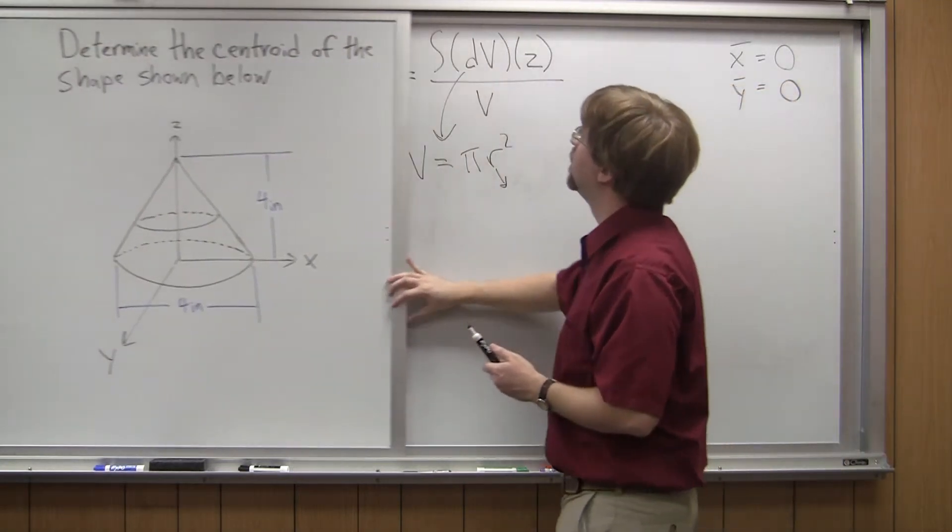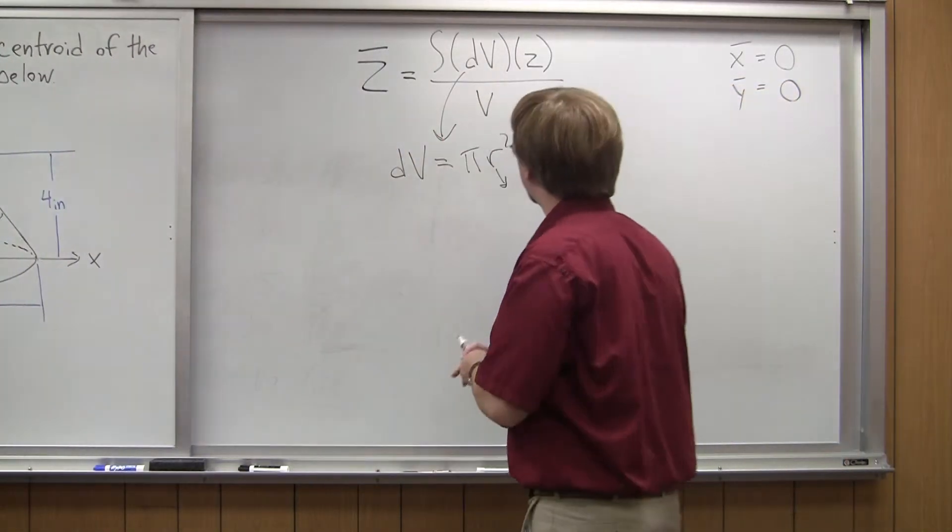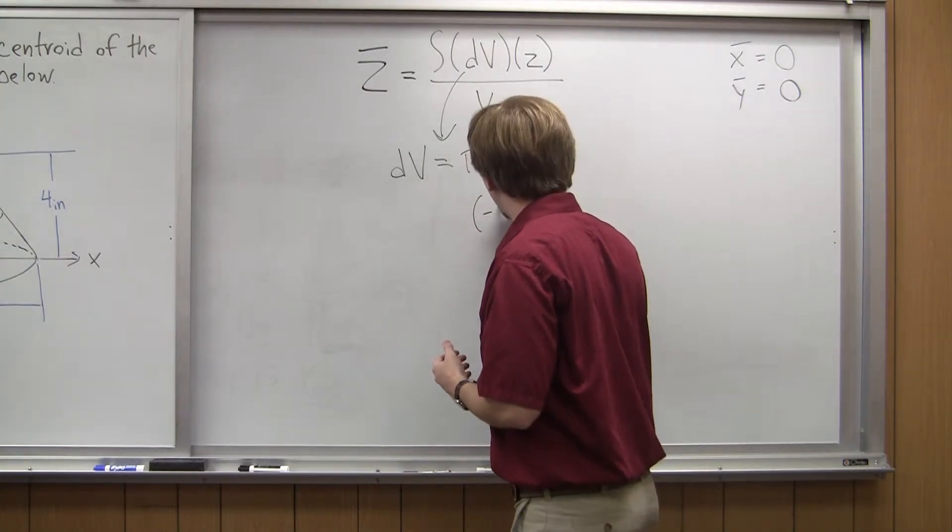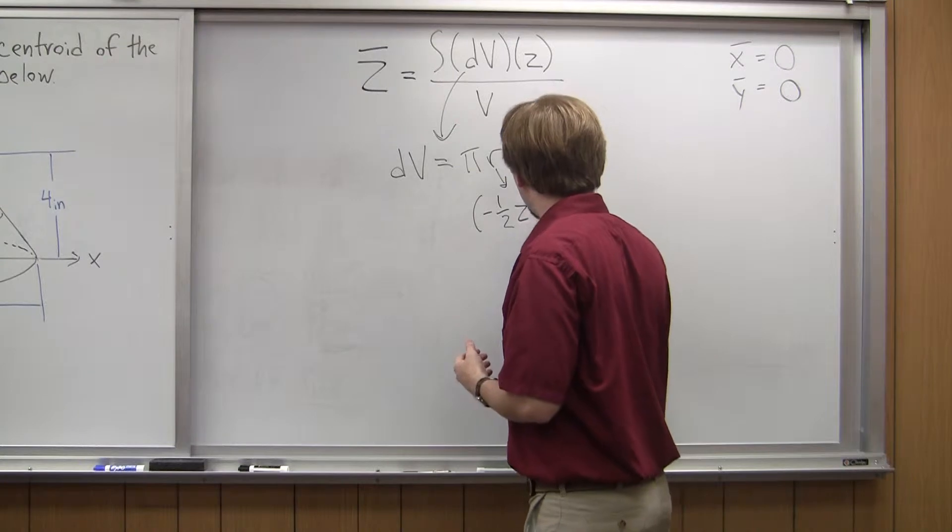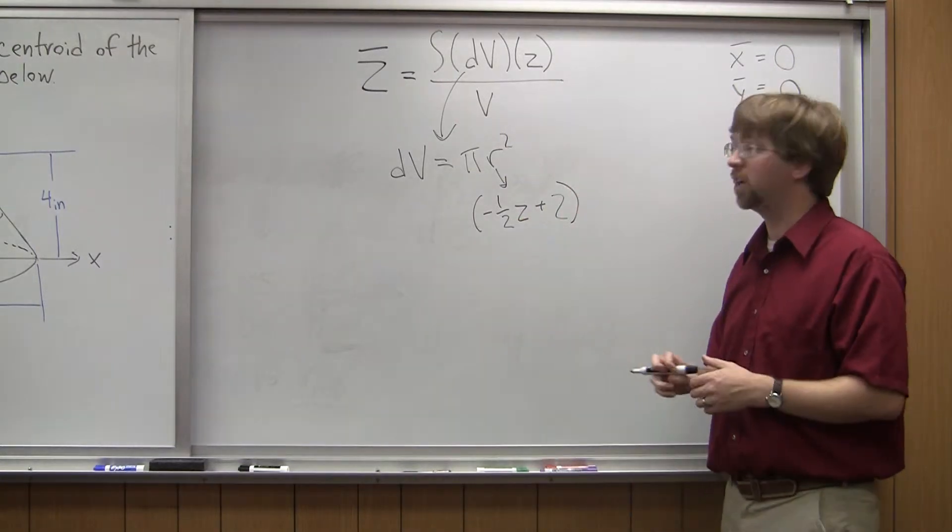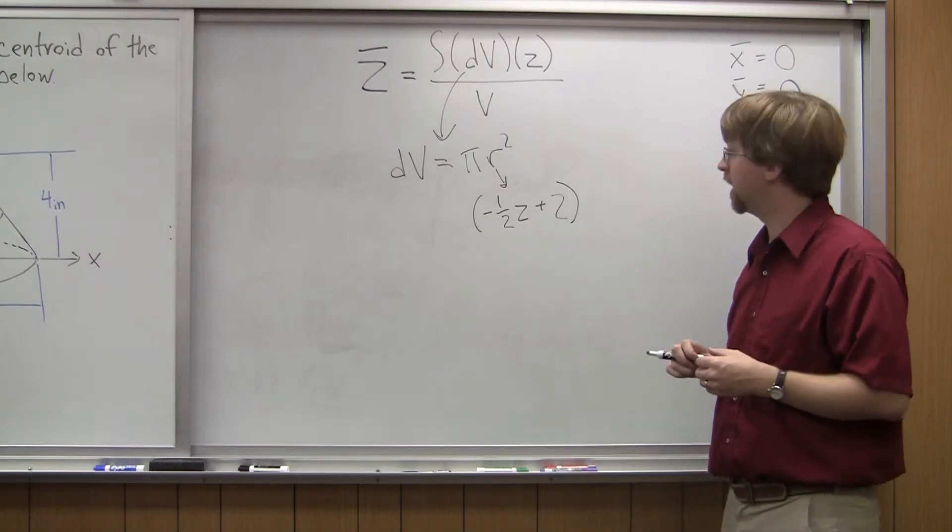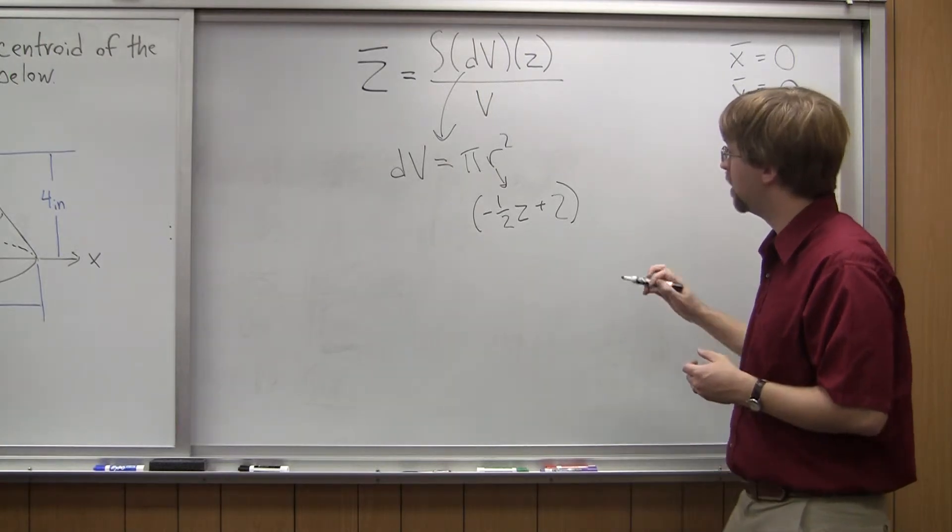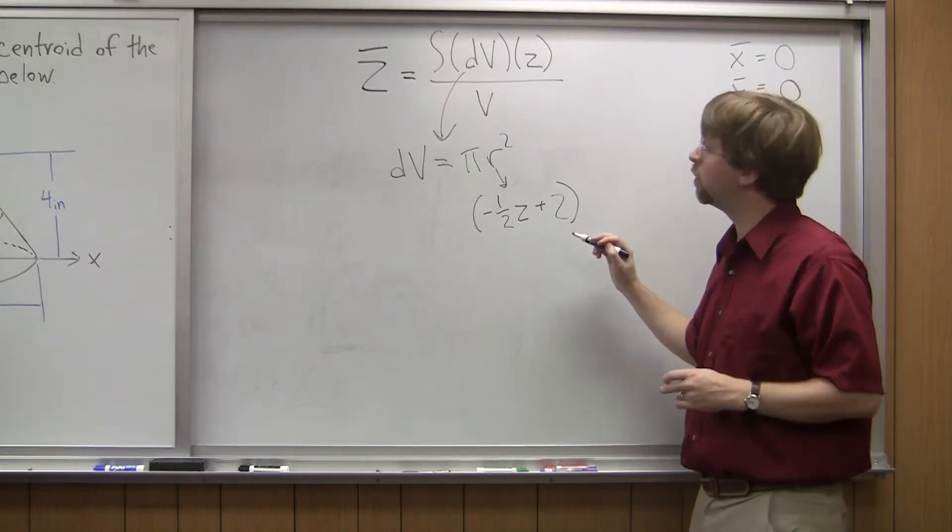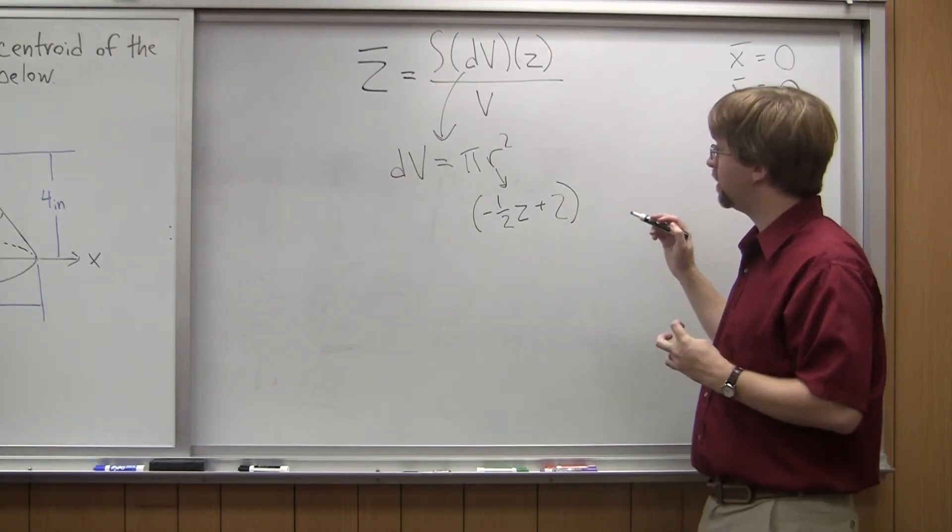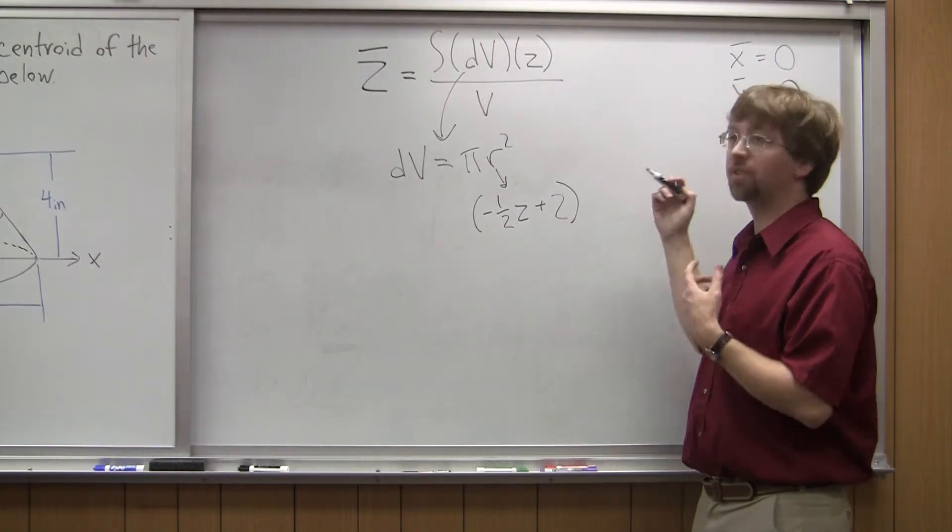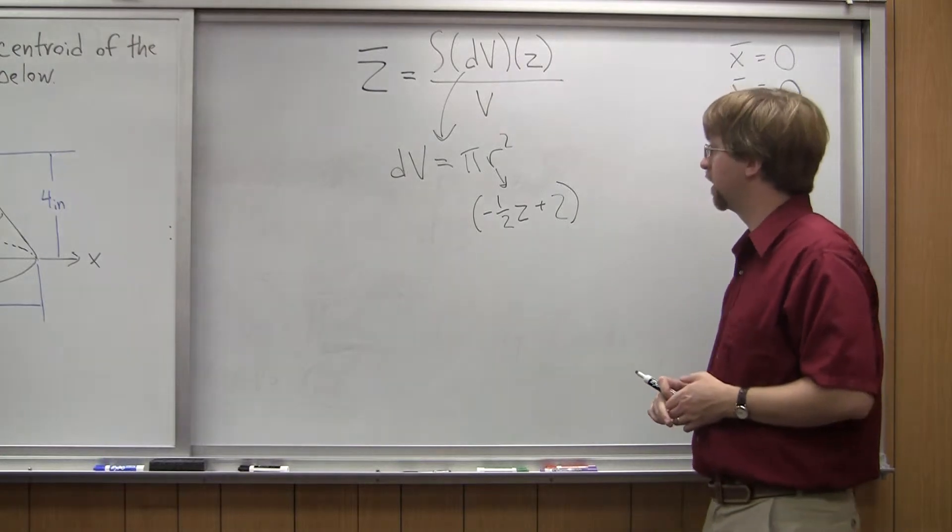I can find an equation for my radius. So my radius turns out to be negative one-half times z plus two. And this is the equation for the line describing that. So when z equals zero, I've got negative one-half times zero plus two, my radius is two. When I've got z equals four, negative one-half times four plus two equals zero, my radius is zero. That's the other point I was looking at.